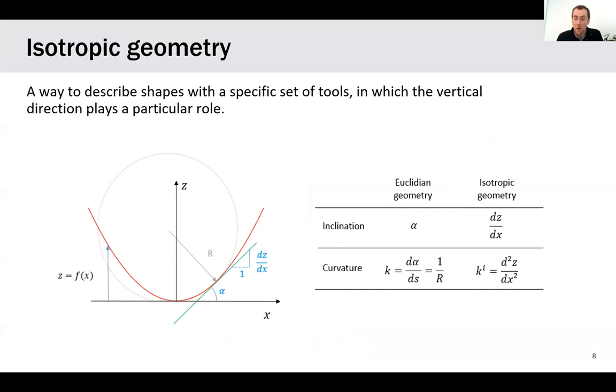To introduce i-Weingarten surfaces, we first need to introduce isotropic geometry, the context from which they emerge. Isotropic geometry is just a way to describe shapes with a specific set of tools in which the vertical direction plays a different role from the other dimensions. The difference with the more traditional Euclidean geometry is best seen when looking at curvature, which is the quantity that will be relevant for the work here. In Euclidean geometry, if we look at a planar curve, we define the curvature as the inverse of the radius of the osculating circle,